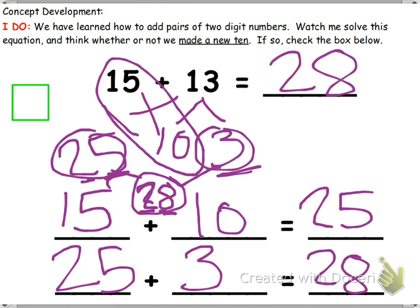So we have to think about it. Did we make a new 10? Well, whenever we added our ones together, whenever we added 5 and 3 together, that only made 8. So no, we did not make a new 10, so we will not check this box.